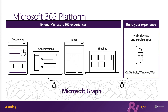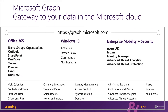Microsoft Graph is the gateway to your data in the Microsoft Cloud. The Microsoft Cloud includes multiple services and data types that we can take advantage of from Office 365, and it's all considered part of the Microsoft 365 platform. Developers can integrate the signed-in user's email, calendar, contacts, and tasks into custom apps.